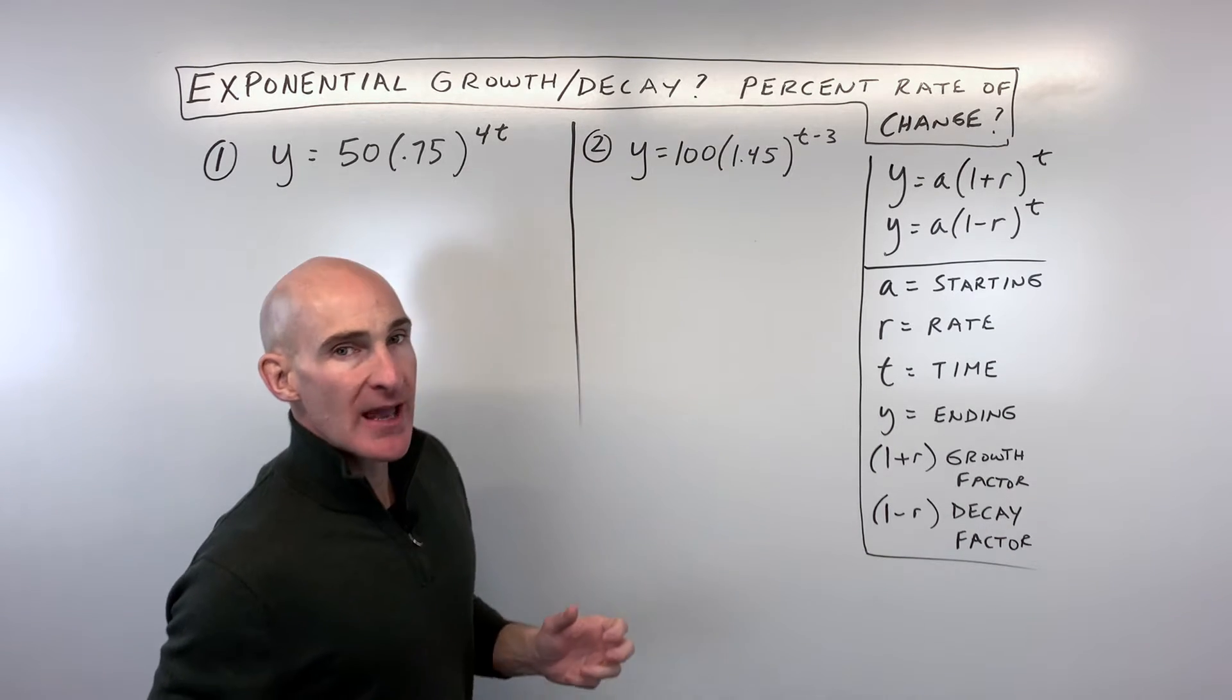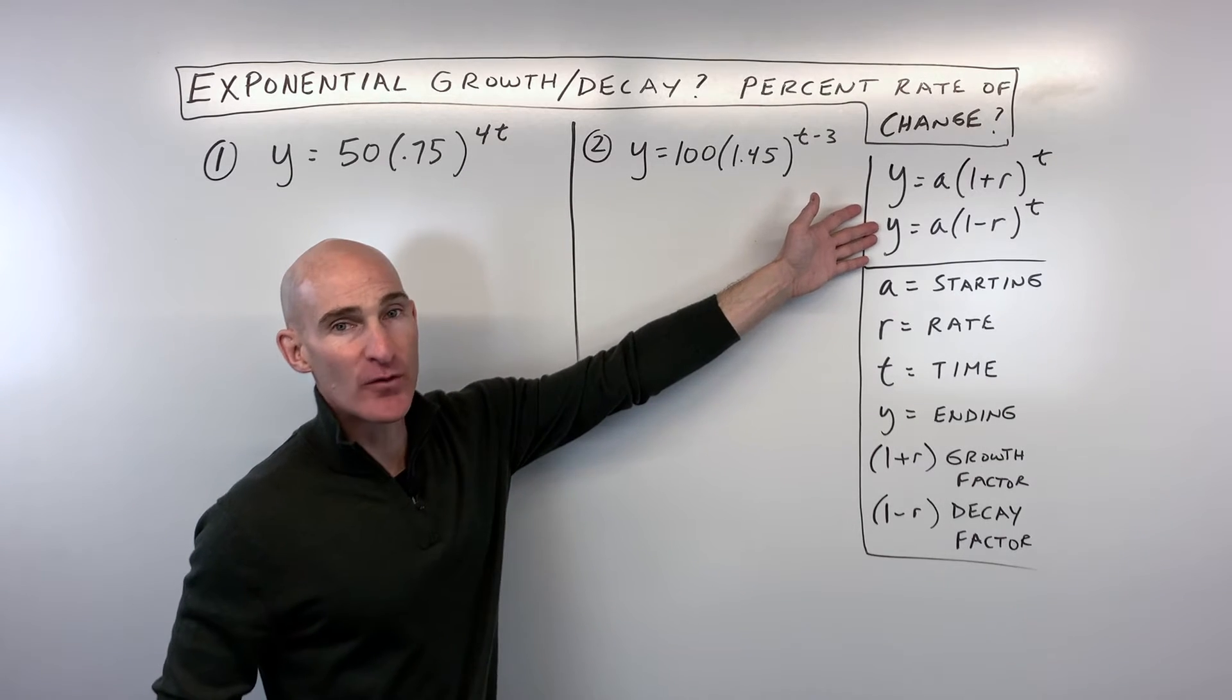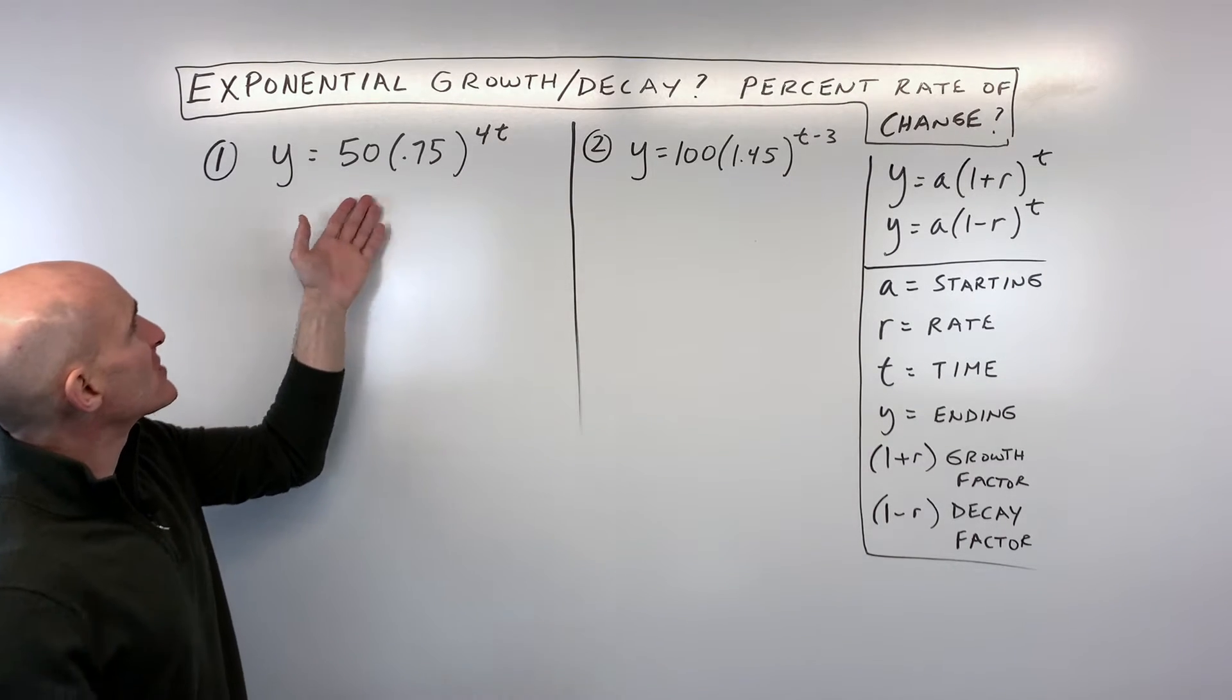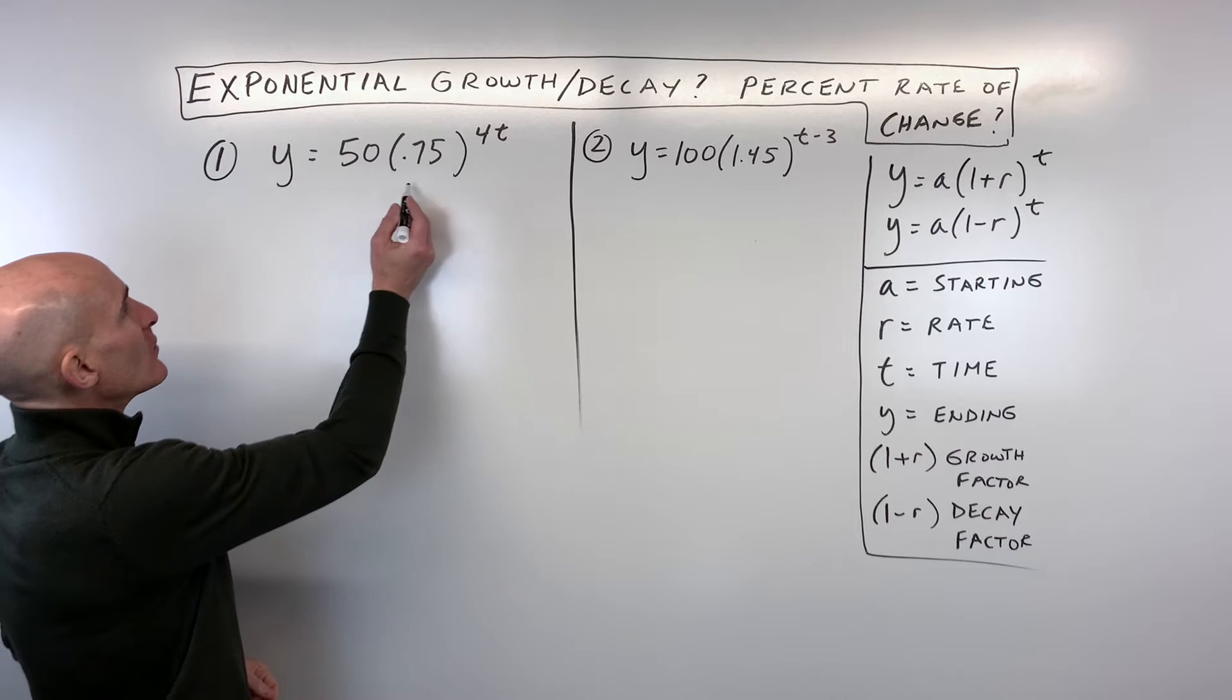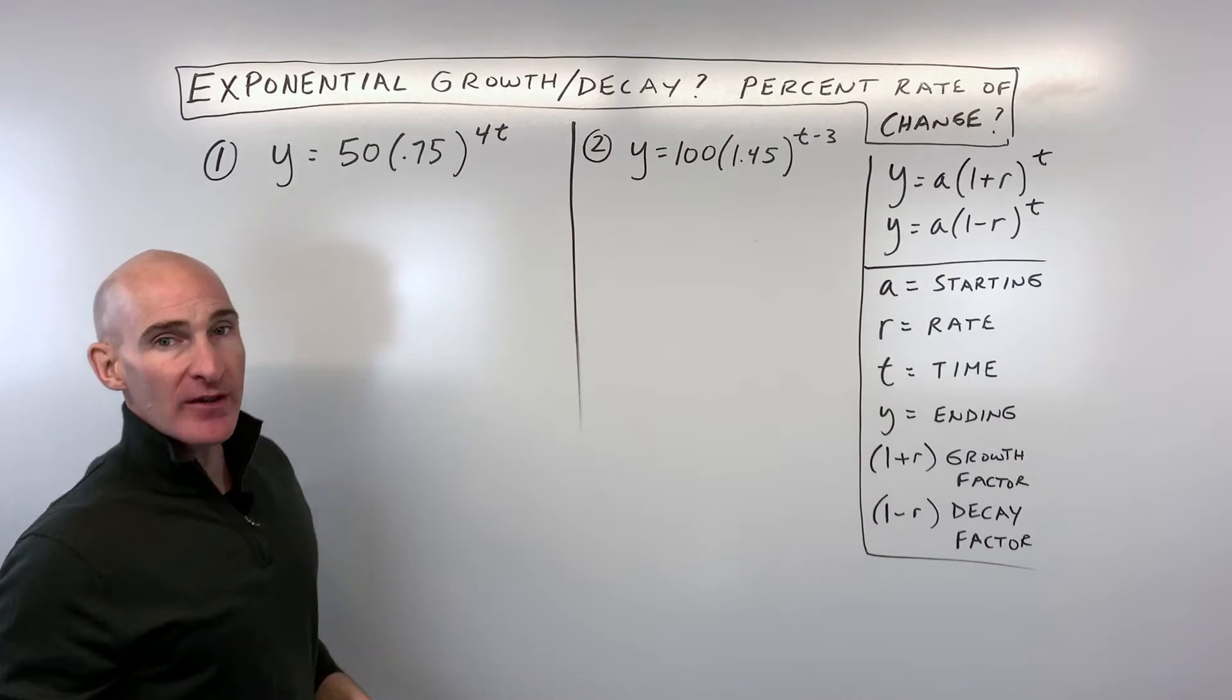So let's go through a couple examples and let's talk about how to rewrite these so that they match these forms here. So in this first example, what you can see is we've got this 0.75 to the 4t, not to the 1t, so how can we rewrite that?